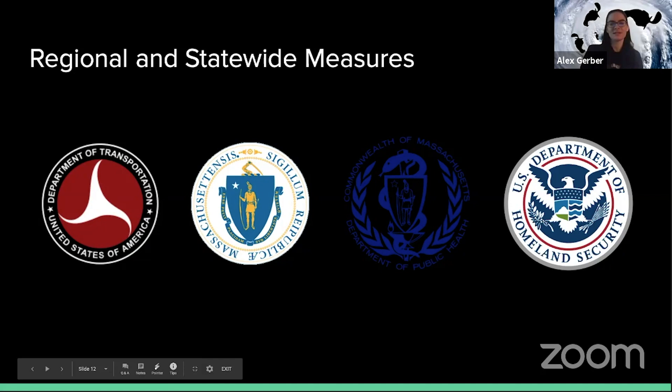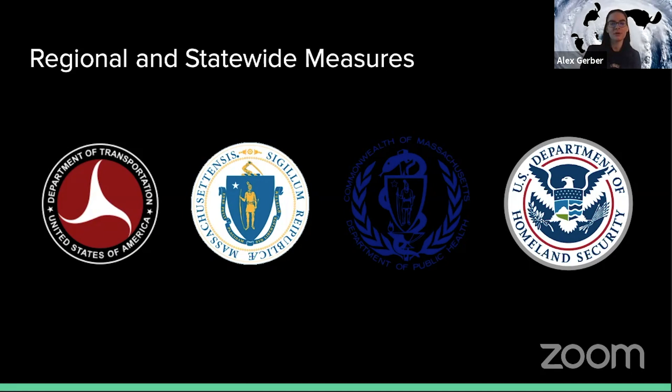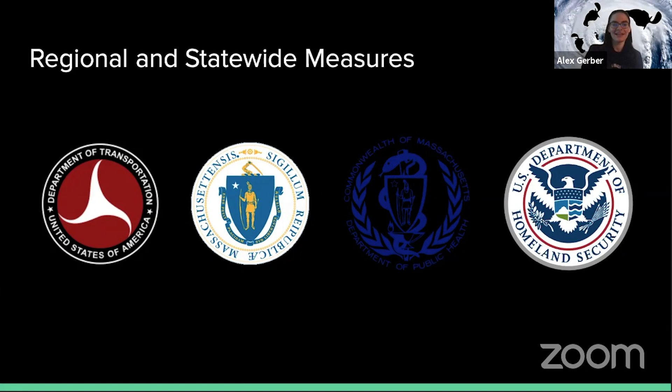In preparation for Hurricane Tim, the state of Massachusetts has implemented regional and statewide measures. The regions of Cape Cod, Massachusetts, and Rhode Island have emergency operation centers activated and staffed by various members from the Department of Transportation and Public Services, Office of General Services, Department of Corrections and Community Supervision, Department of Health, and the Massachusetts Division of Military and Naval Affairs.